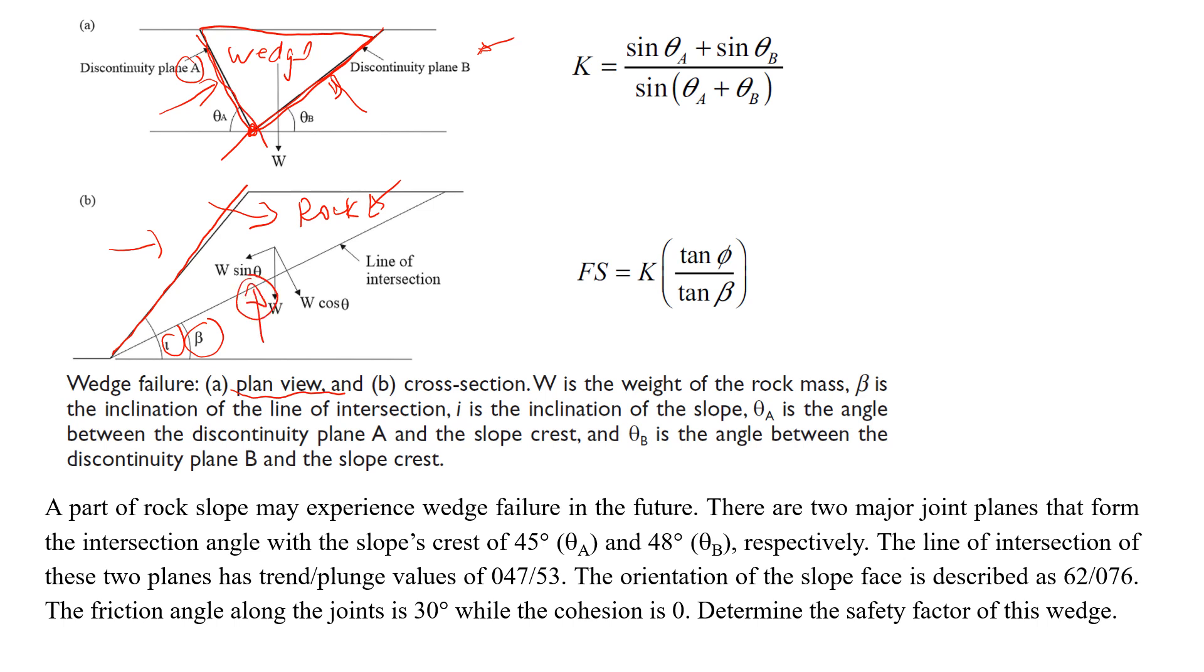So this is what we see here. We will need to know the dip of this line of intersection, and in this example it's going as beta. And we also need to know the strength of this rock wedge along both discontinuities.